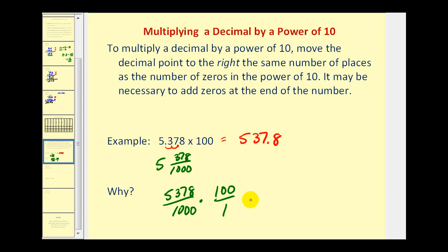If we multiply this by 100, this would actually simplify. This would become a one, this would become a ten. So we can see our denominator would be ten. Therefore, our product should be in tenths, as we see here.